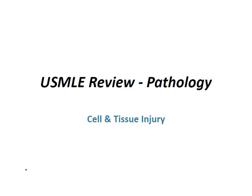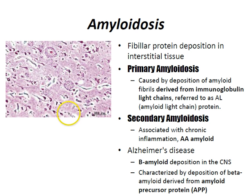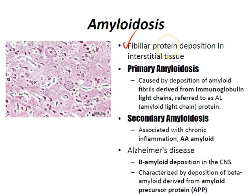We're going to talk about basic pathology today, dealing with cell and tissue injury. Let's start with amyloidosis. Amyloidosis is fibrillar protein deposition in interstitial tissue — that's the definition. It's usually linear, non-branching filaments of beta-pleated sheets.